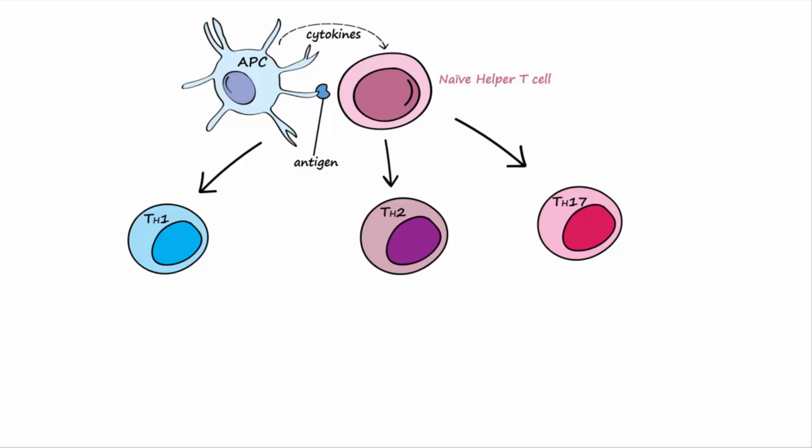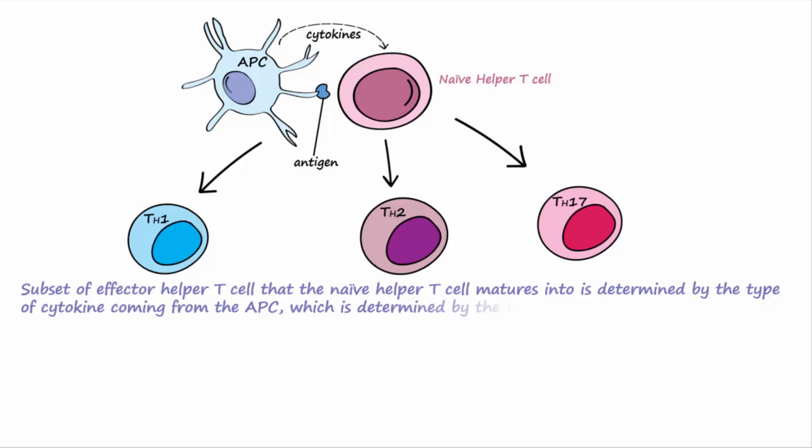Subtypes of effector helper T cells include T helper 1, T helper 2, and T helper 17. The type of cytokine released from the antigen presenting cell is determined by the type of antigen that activated the naive helper T cell, as well as the type of antigen presenting cell. Now activated, these effector helper T cells can then activate other cells to generate a particular immune response.